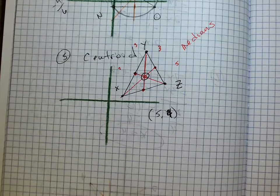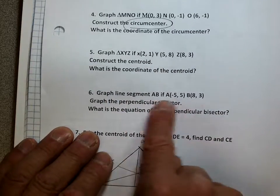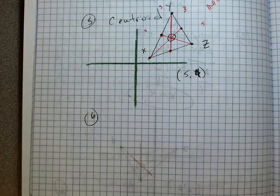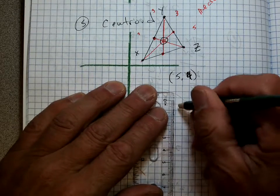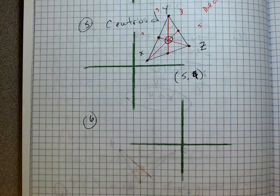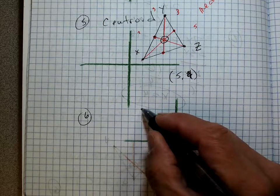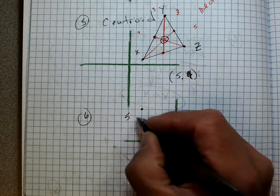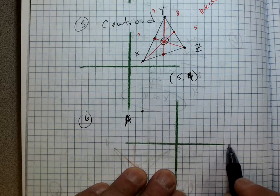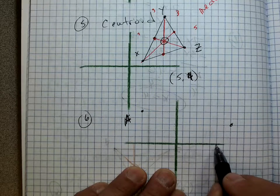Number six is going to be a line segment — we're not drawing a triangle, we're going to draw a line segment. I've got A at negative 5, 5 — there's point A. Point B is at eight, 3 — there's B. Let me draw in my line segment. A line segment has no arrows, because it's only a piece of a line.